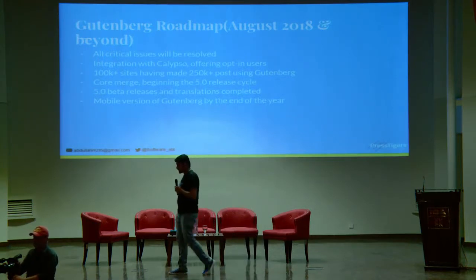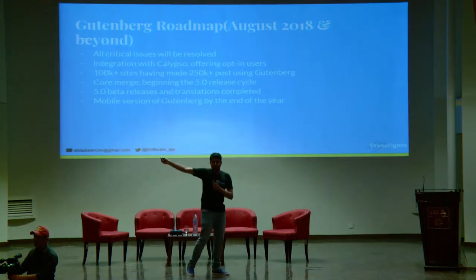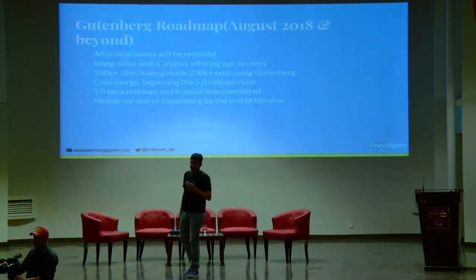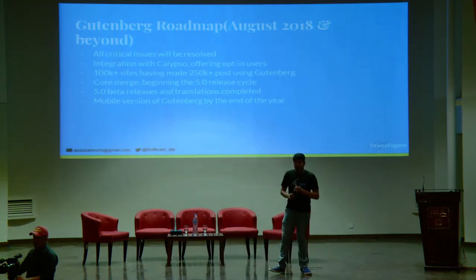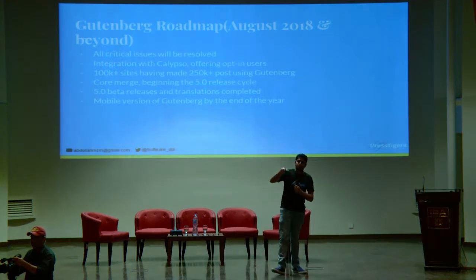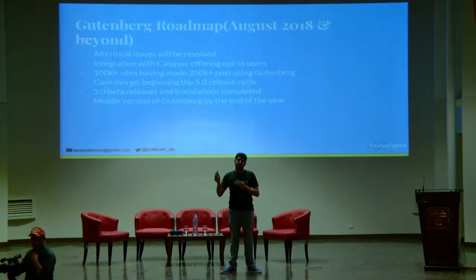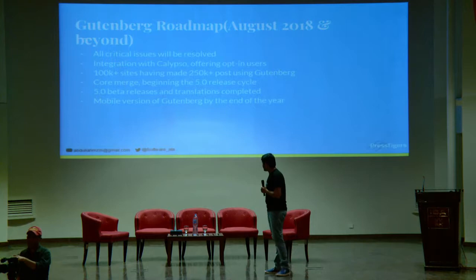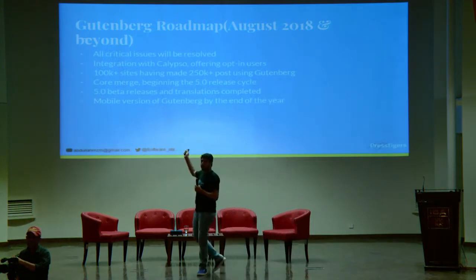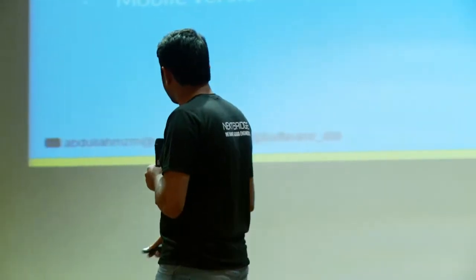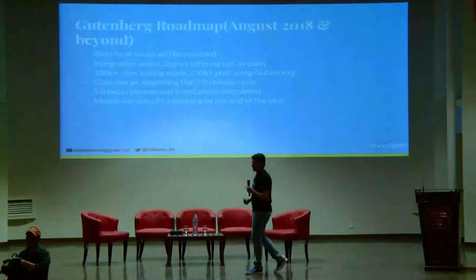What Matt Mullenweg said at WordCamp Europe held in Serbia: the first thing is all critical issues will be resolved. The second thing is integration with Calypso, offering opt-in users — that is also part of the plan. The third thing is 100K plus sites having made 250 posts using Gutenberg — when that milestone is reached, they will launch Gutenberg. Now it is in beta version.